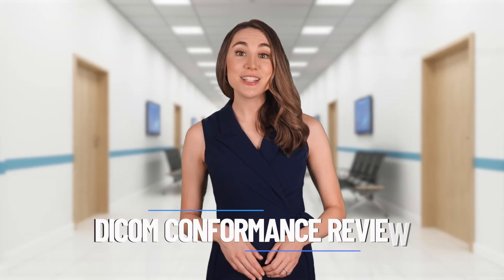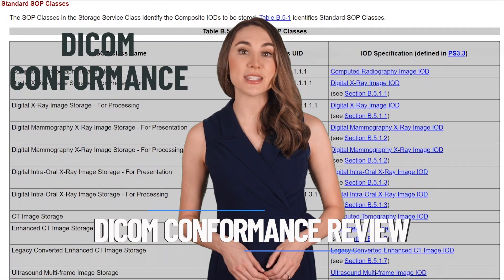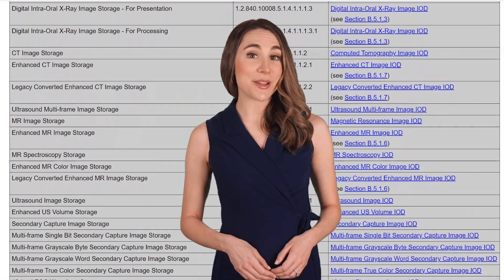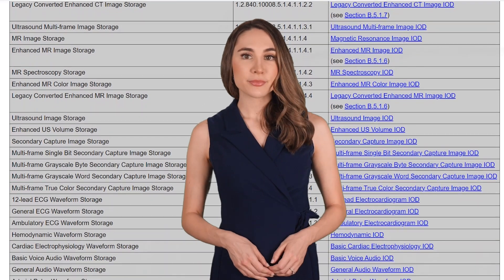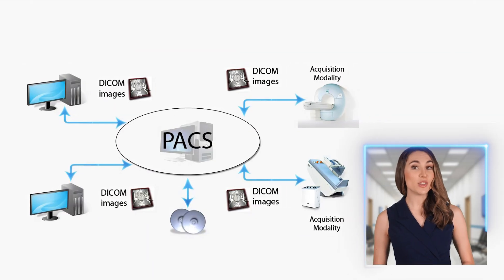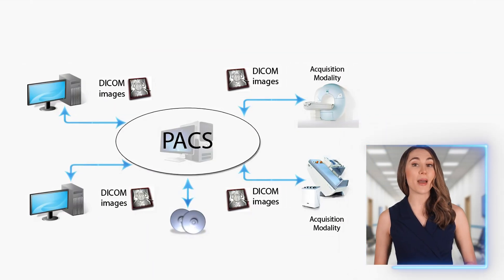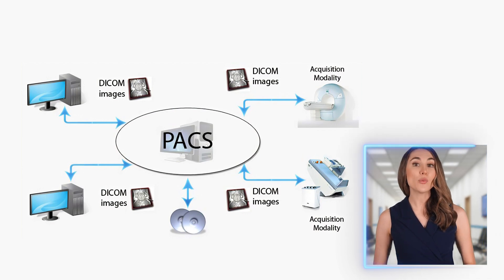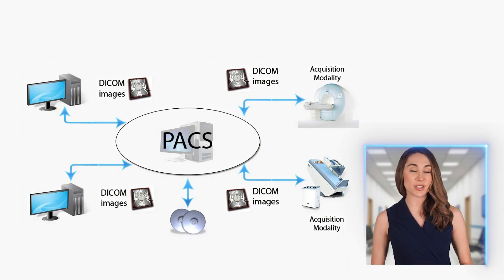Early on in the project, make time to review the DICOM conformance statement of the new scanner — that is, if you are given enough lead time. Wishful thinking, right? This document outlines which SOP classes the scanner uses for image storage, query, retrieve, and worklist. You'll want to compare this with your PACS conformance statement to ensure compatibility. If there's a mismatch in SOP classes, work with the CT vendor to adjust the scanner's configuration.